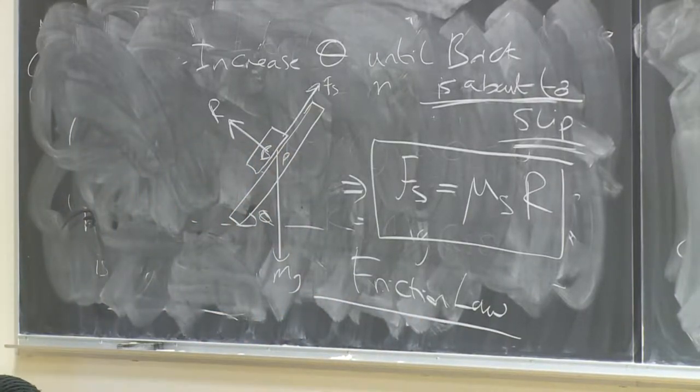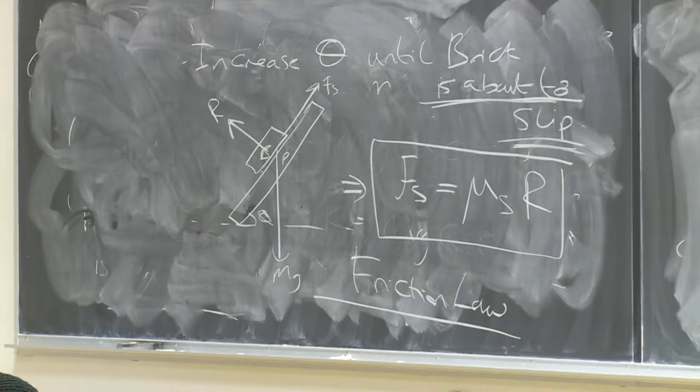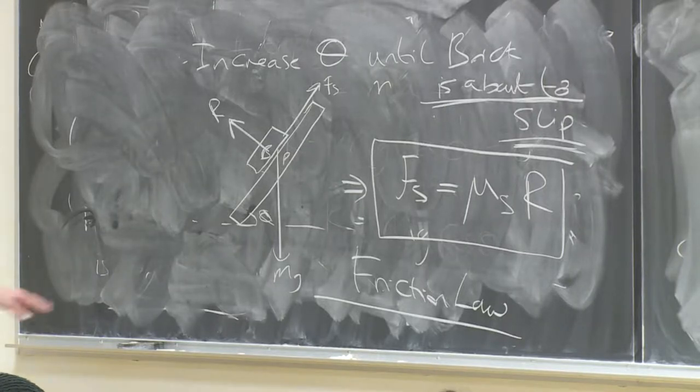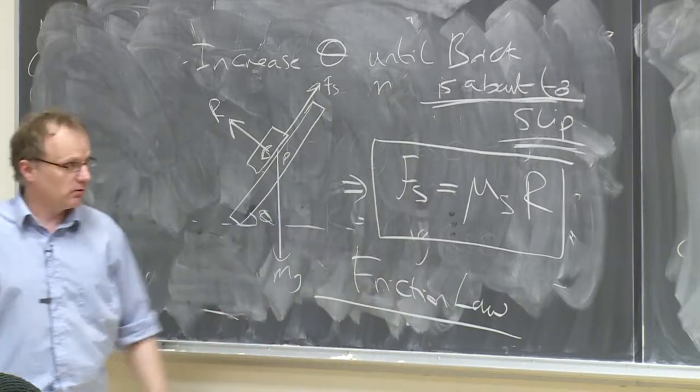Okay, now mu s is a coefficient of static friction, and it depends on what the surfaces are made of. So if it was glue, then mu s would be close to one. If it's ice, then mu s would be close to zero.